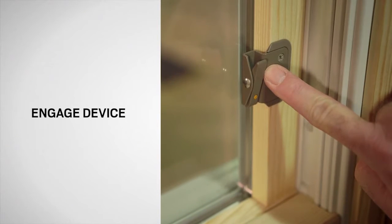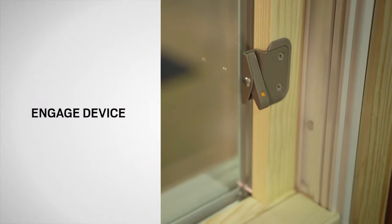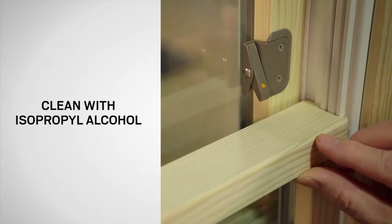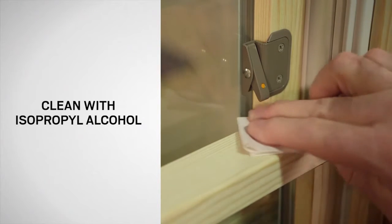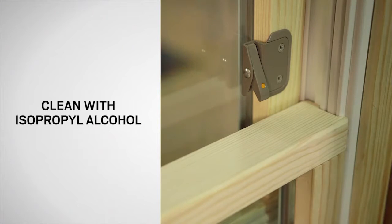Engage the window opening control device by pressing the top of the device towards the glass. Raise the bottom sash to the window opening control device. Clean the top rail of the bottom sash directly under the window opening control device with isopropyl alcohol.